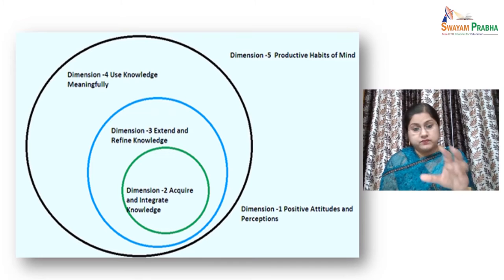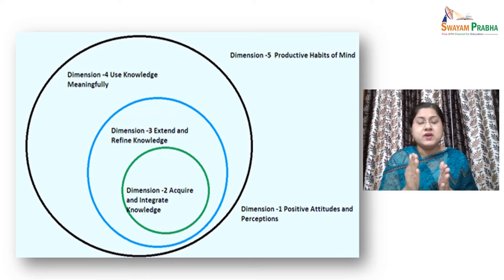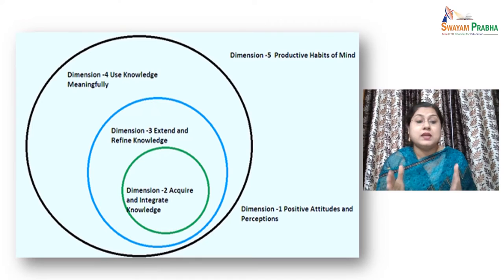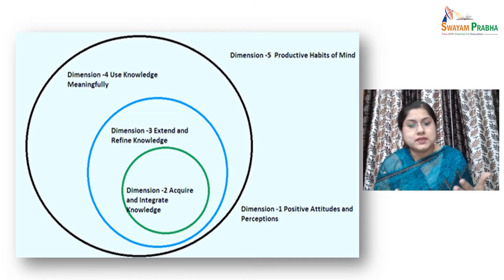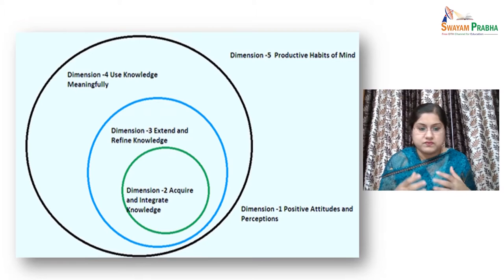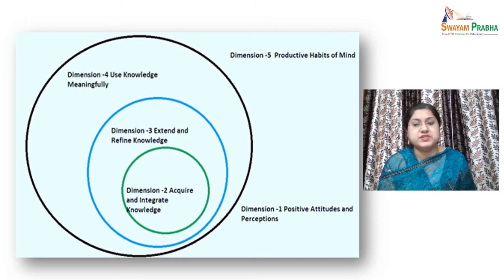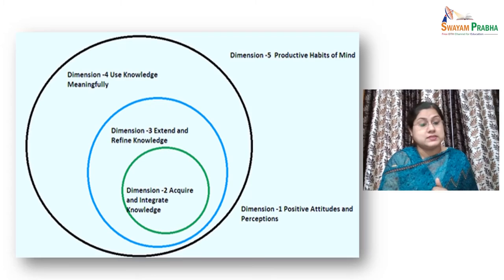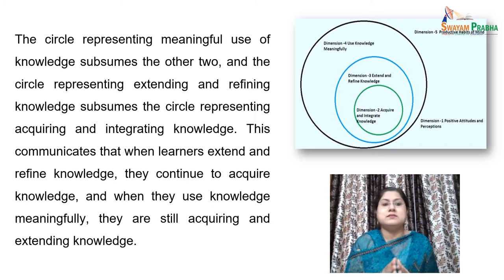Dimension number one and five are always factors in the learning process — this is why they are part of the background of the graphic shown here. You can see that dimensions one and five are outside the circles. When positive attitudes and perceptions are in place and productive habits of mind are being used, learners can more effectively do the thinking required in the other three dimensions: acquiring and integrating knowledge (dimension two), extending and refining knowledge (dimension three), and using knowledge meaningfully (dimension four). Notice the relative positions of the circles for dimensions two, three, and four. The circle representing meaningful use of knowledge subsumes the other two.